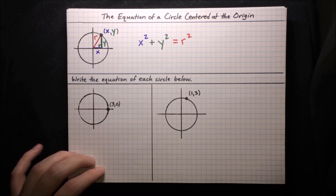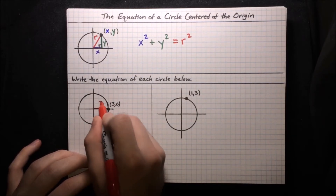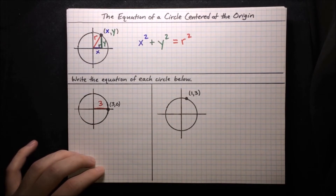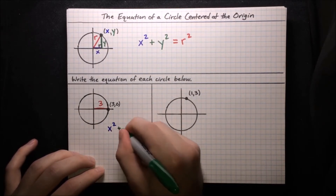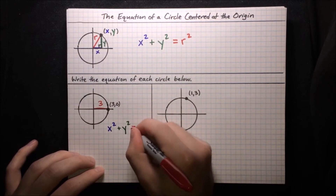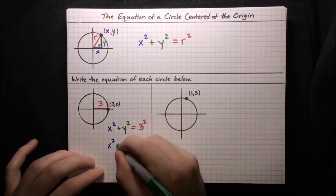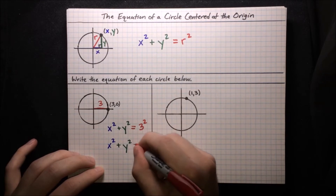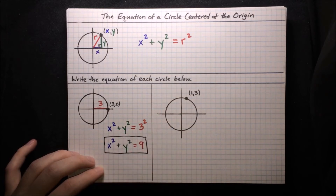Write the equation of each circle below. First, we've got a circle with the point (3, 0) labeled. From that information, it's clear that the radius of the circle is just 3. Our final equation should have x and y as variables, but r is a constant, so we substitute in r = 3. So x² + y² = r² becomes x² + y² = 3², which means x² + y² = 9. That is the equation of our circle.